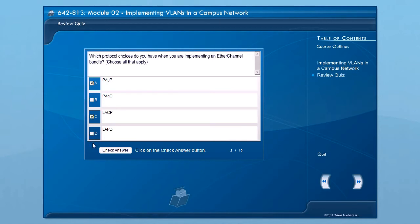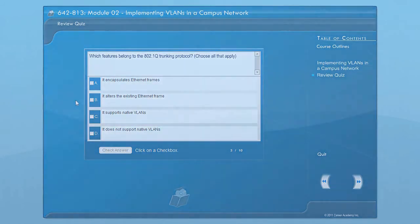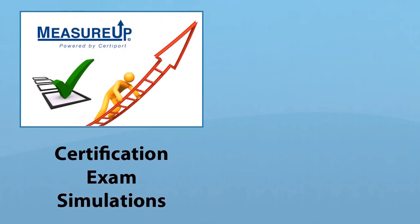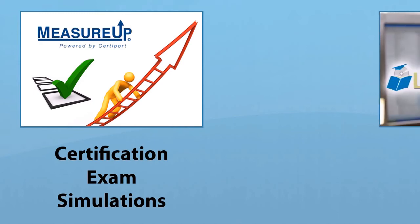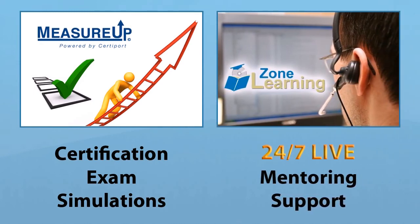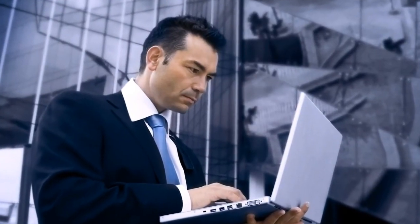The score is recorded by our robust learning management system, allowing both students and instructors to track progress. The Network Engineer All Access Pass also includes official Measure-Up certification exam simulations and 12 months of unlimited access to our award-winning 24/7 around-the-clock live mentoring support, allowing you to chat or talk with a certified instructor at any time.